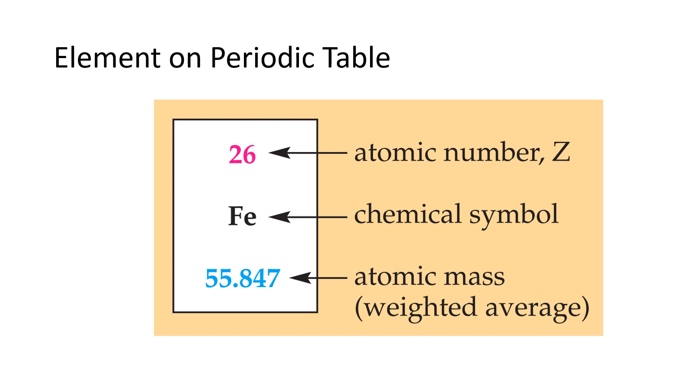Then there typically will be two numbers with it as well. The number shown on the bottom here, the 55.847, is the average atomic mass, which is an average that takes into account the fact that more than one isotope of an element exists, and the isotopes have different masses. And so if we average all of that out, that's where we get that number that's on the bottom.